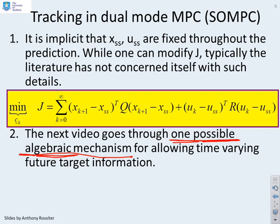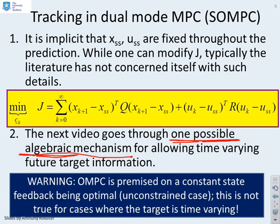Now, we're not doing anything novel here. We're simply saying that for convenience, the literature has ignored this type of detail because the algebra is messy. But for completeness, we're going to go through the algebra so that we can demonstrate the impact.